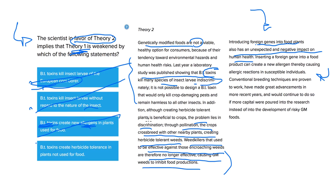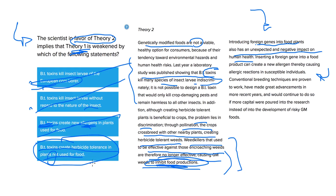The weeds can then come in and take up resources that would otherwise support food production, inhibiting and diminishing food output because non-food plants occupy that space. So answer choice D — BT toxins create herbicide tolerance in plants not used for food — is correct. Just like these weeds inhibit food production, BT toxins can cause other non-food plants to take up resources from plants meant to produce food. I hope that helps with this problem and happy prep.